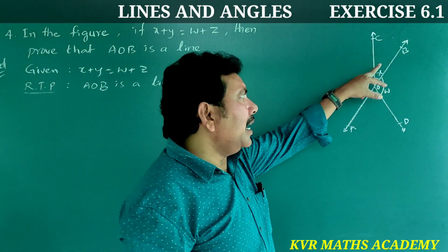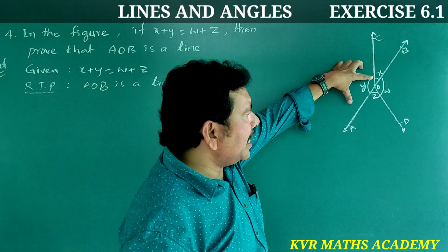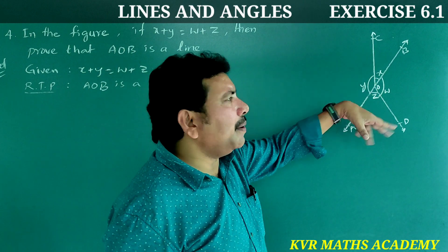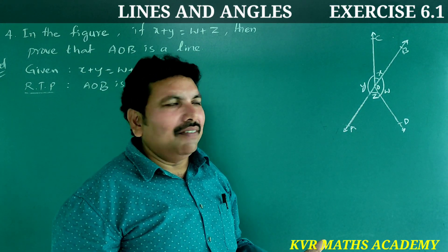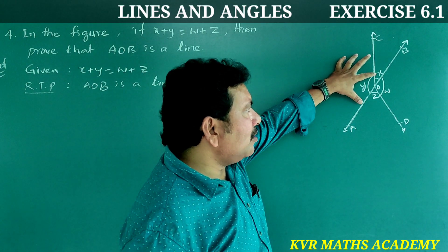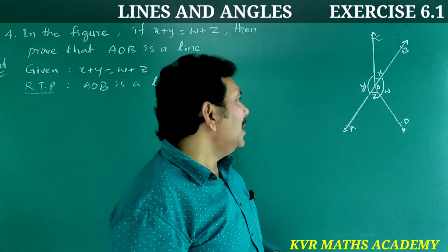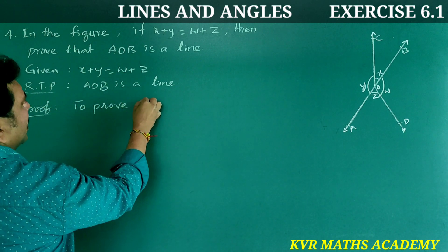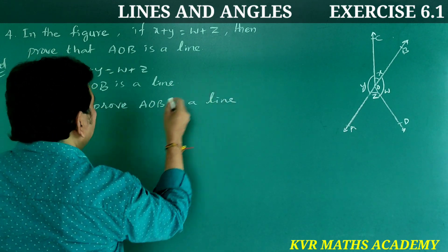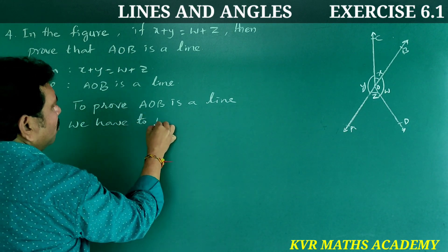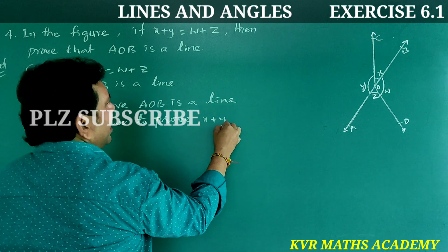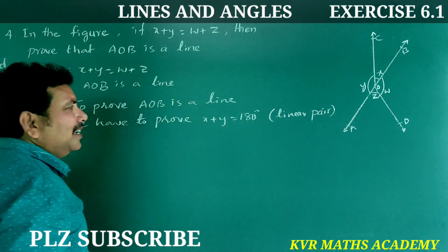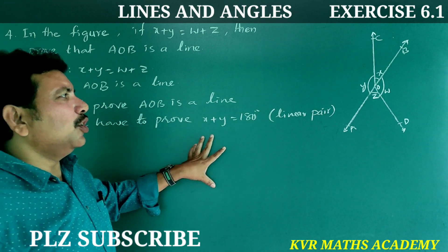To prove AOB is a line, it is sufficient to prove that x plus y equals 180 degrees, because if the angles form a linear pair on a straight line, AOB must be a straight line. So we need to prove x plus y equals 180 degrees.